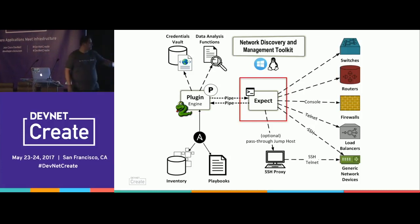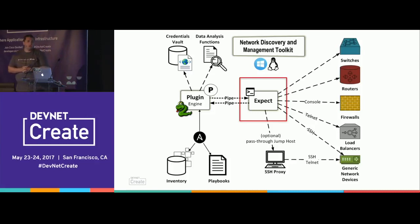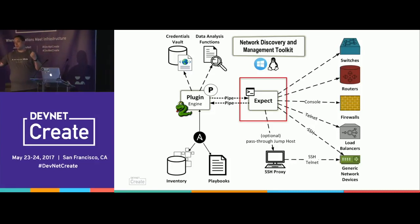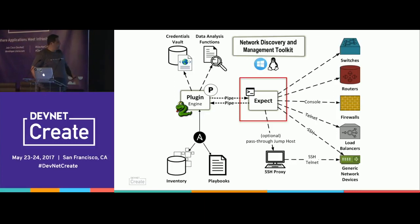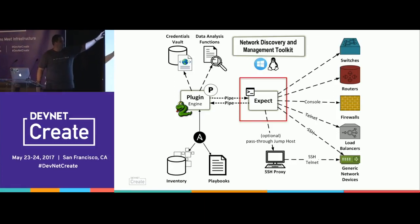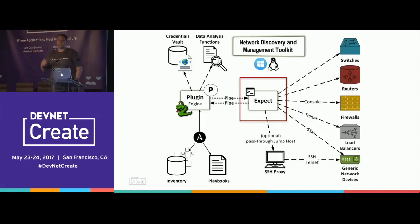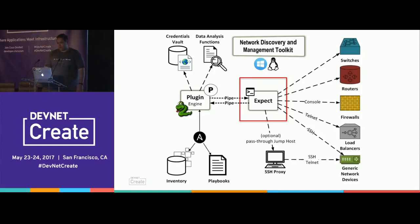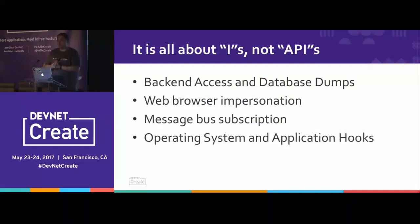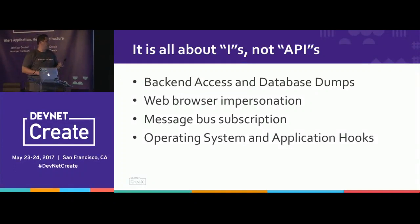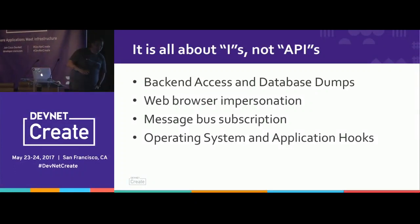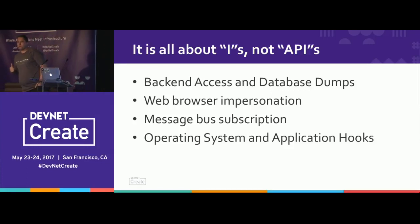Here's how we do that: Ansible has a plugin — a Python file that acts as a bridge between Ansible and Expect. The Expect script then interacts with individual devices. Not only can it interact with devices, it can interact with anything. It's all about interfaces, not only APIs.